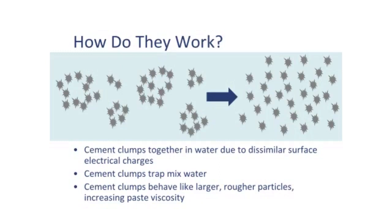Well, if you had a very powerful microscope and you could look inside the concrete — I've kind of drawn the schematic that illustrates that — you're looking at individual cement particles floating in water. Now cement particles are very, very fine. They're roughly a tenth the diameter of a human hair. They vary in size, just like sand particles vary in size, and just like gravel particles vary in size. They're very, very tiny.